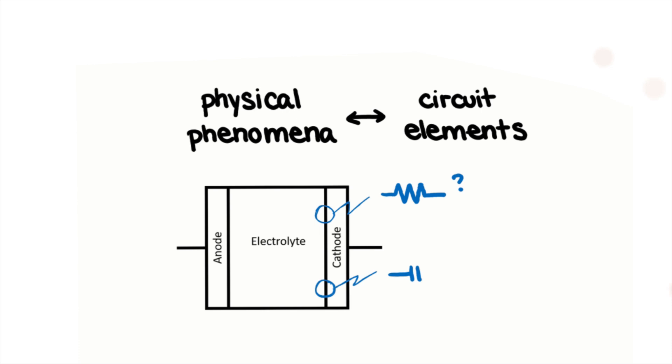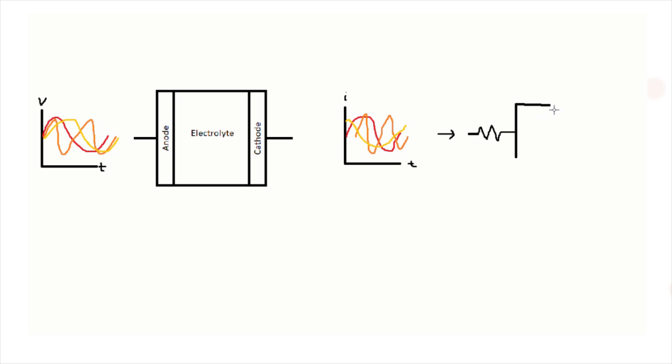We can link these physical phenomena in the cell to the behavior of common circuit elements, which have different responses to alternating electrical signals. Impedance is used to characterize these differences, and its behavior relative to frequency is used to fit to equivalent circuit models to separate out the physics governing the system.